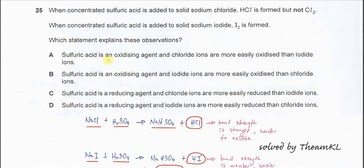For A, sulfuric acid is an oxidizing agent. So this one is wrong. The chloride will not oxidize to chlorine. Therefore this is wrong.